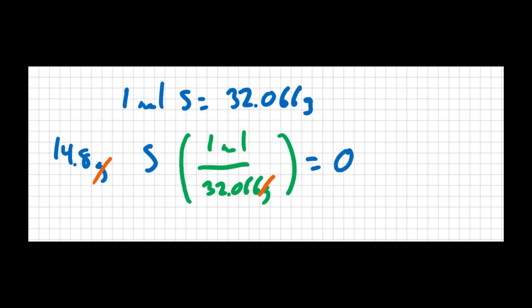So to three sig figs, 0.462 moles of sulfur. That makes sense—if one mole is 32 grams and I'm at around 15 grams, I have a little less than one half a mole.